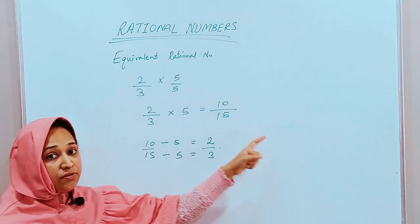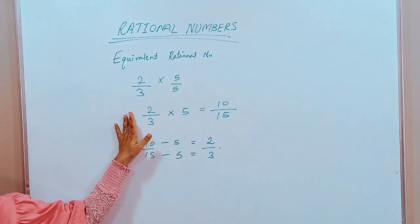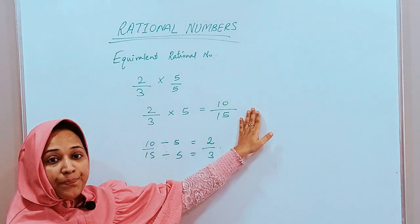So, any number when reduced to the simplest form comes back to the original number. This becomes the equivalent rational number.